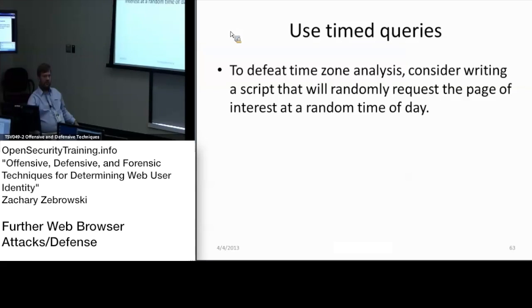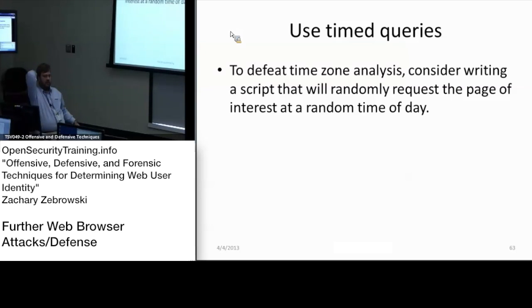For timezone analysis — one of the characteristics of internet connections — rather than doing all the work during your work hours, write a cron job to grab a web page at a time which would be expected for that country and period of time. That would be a good way of obfuscating the fact that you're trying to browse the web as a user in another country.